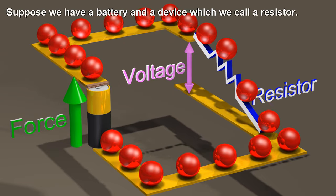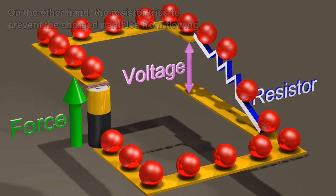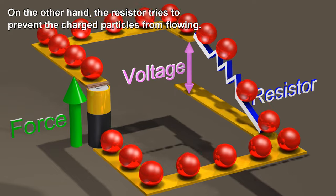Suppose we have a battery and a device which we call a resistor. The battery will create a voltage, causing charged particles to flow around the loop. On the other hand, the resistor tries to prevent the charged particles from flowing.